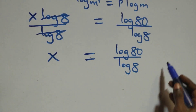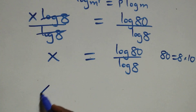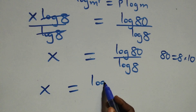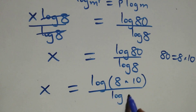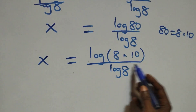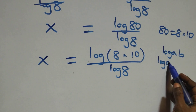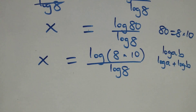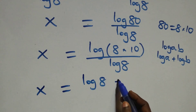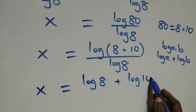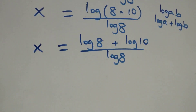Then the next step here, we can write 80 as 8 times 10, which implies x = log(8×10) over log8. This follows the log product rule: log(a×b) = log(a) + log(b), so we have x = (log8 + log10) over log8.